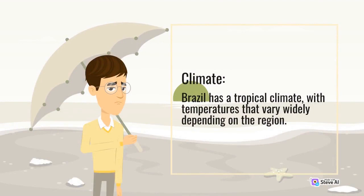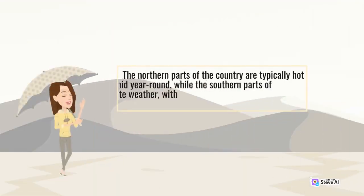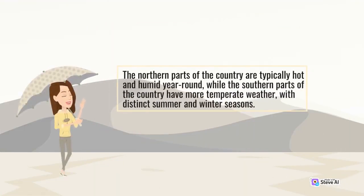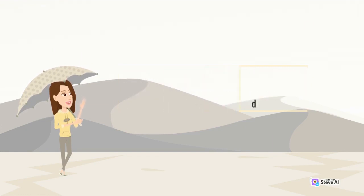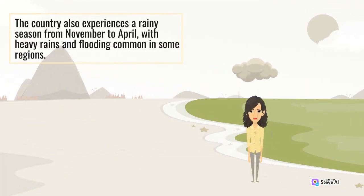Brazil has a tropical climate, with temperatures that vary widely depending on the region. The northern parts of the country are typically hot and humid year-round, while the southern parts have more temperate weather, with distinct summer and winter seasons. The country also experiences a rainy season from November to April, with heavy rains and flooding common in some regions.